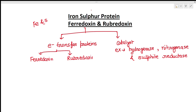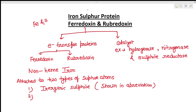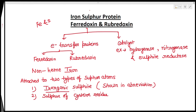In these two proteins, there is the non-heme type of iron — remember, it is non-heme type. This iron is attached to two types of sulfur atoms. One sulfur atom is from the inorganic sulfide, and the second type is the sulfur atom of the cysteine residue. In the abbreviations or symbols of ferredoxin and rubredoxin, only the inorganic sulfide is shown.